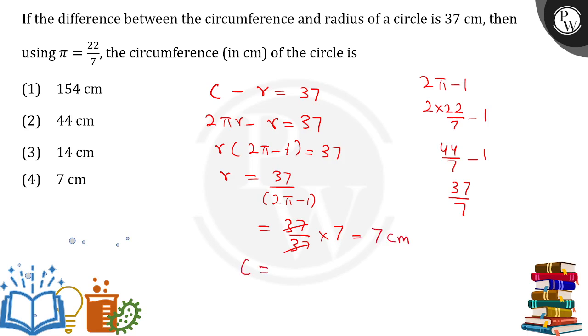The circumference is 2πr. Substituting the values: 2 × 22/7 × 7. The 7s cancel out, giving 2 × 22 = 44 cm, which is option number 2.